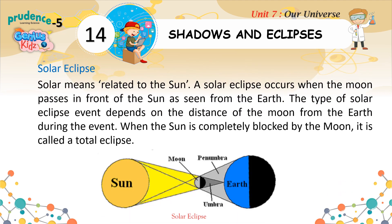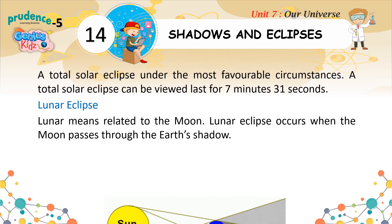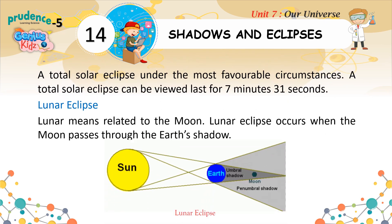Solar means related to the sun. A solar eclipse occurs when the moon passes in front of the sun as seen from the earth. The type of solar eclipse depends on the distance of the moon from the earth during the event. When the sun is completely blocked by the moon, it is called a total eclipse. Under the most favorable circumstances, a total solar eclipse can last for 7 minutes and 31 seconds.